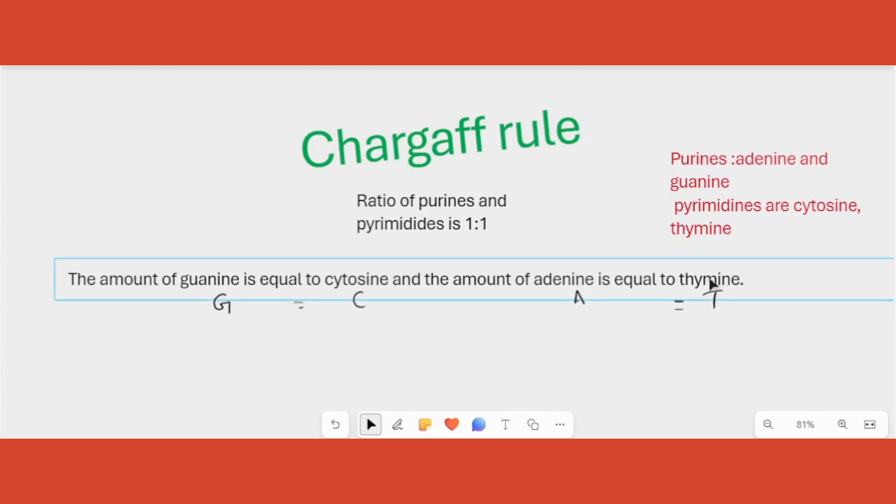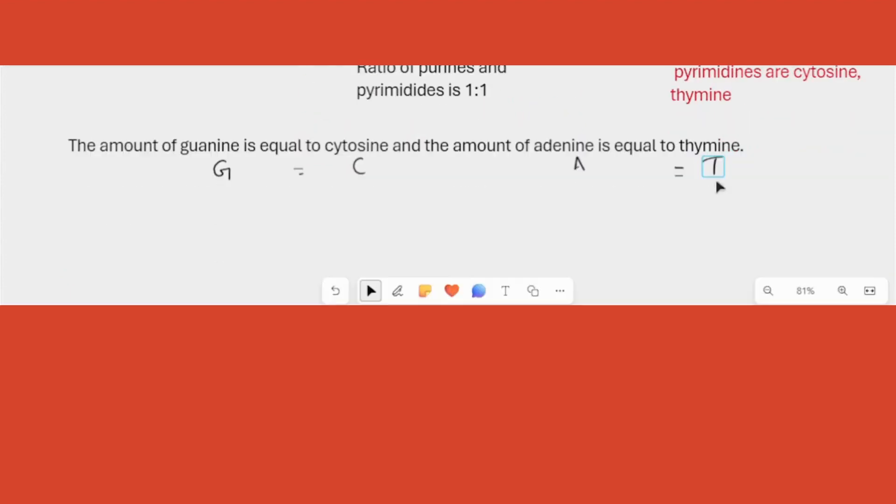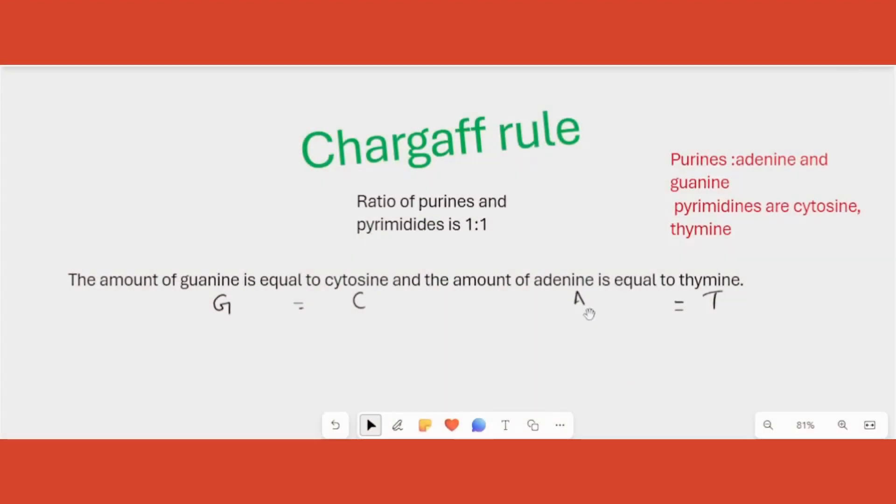This makes sense right? Why does it make sense? Because adenine always pairs with thymine on the other strand. If it is pairing, that is A is pairing with T, the number of A will be equal to T obviously. The same way G pairs with C on the other strand. So that means if there is one G there has to be one C also. If there are 10 G there has to be 10 C also. That is common sense right?